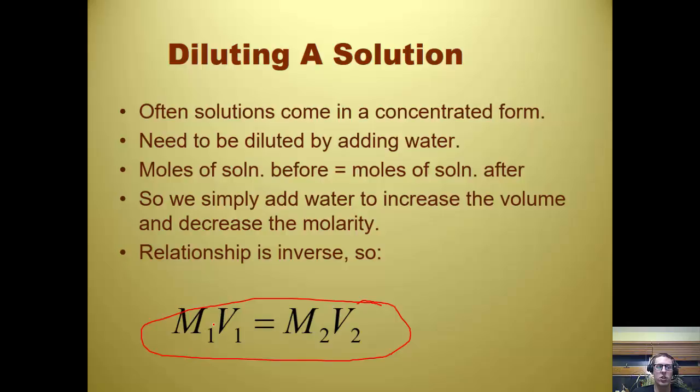So M1, this is our starting concentration. V1 is our initial volume that we use. M2 is our final concentration, and V2 is our final total volume.